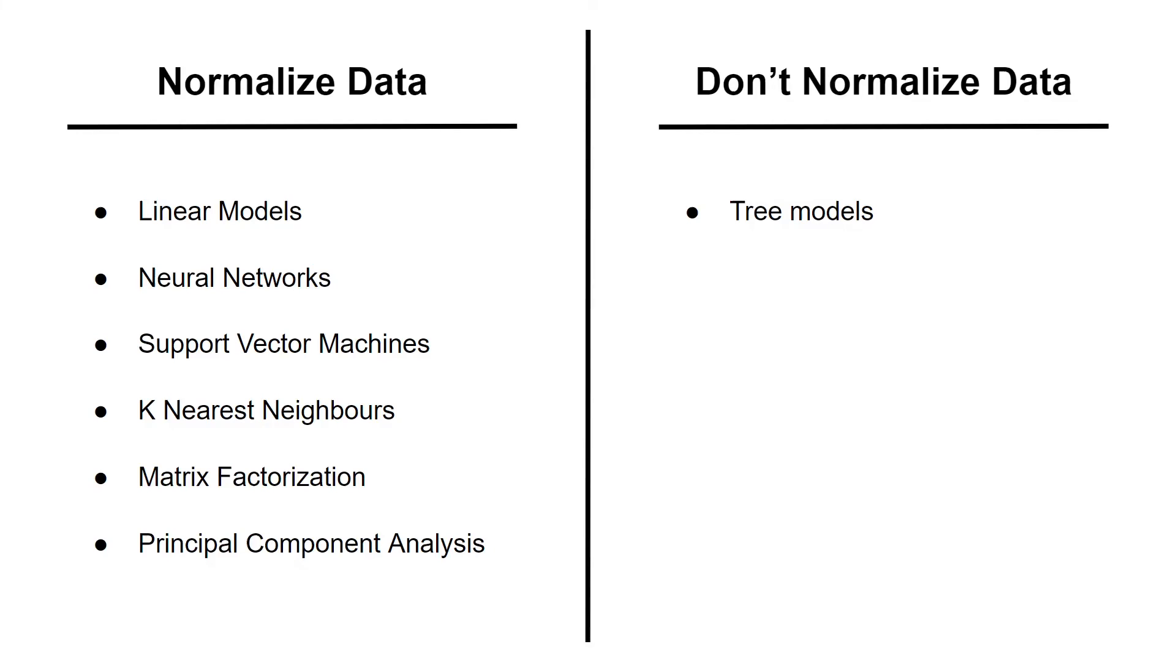Examples in this category include all the tree algorithms like random forest, CART, gradient boosted decision trees and so on. Also, another category of models that do not require input normalization are the ones that rely on the distribution of the variables like naive Bayes.